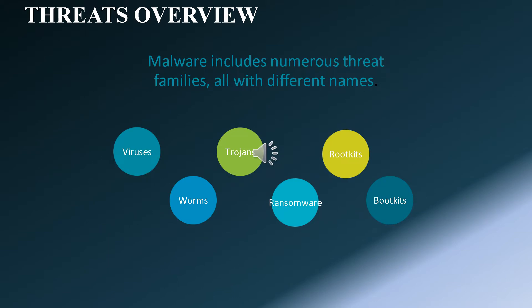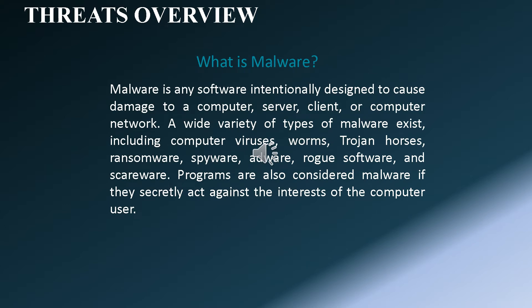Let's talk more on malware. Malware has numerous families with many names. What is malware? Malware is any software intentionally designed to cause damage to a computer, server, client, or computer network. A wide variety of types of malware exist, including computer viruses, worms, trojan horses, ransomware, spyware, adware, rogue software, and scareware. Programs are also considered malware if they secretly act against the interests of the computer user.